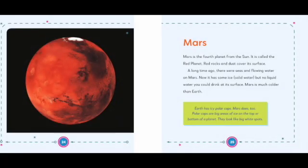Mars. Mars is the fourth planet from the sun. It is called the red planet. Red rocks and dust cover its surface. A long time ago, there were seas and flowing water on Mars. Now it has some ice, solid water, but no liquid water you could drink at its surface. Mars is much colder than Earth. Earth has icy polar caps. Mars does too. Polar caps are big areas of ice on the top or bottom of a planet. They look like big white spots.